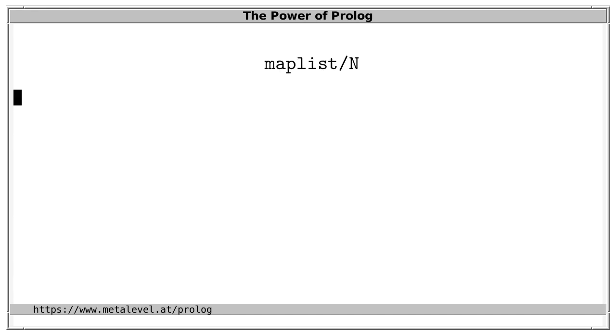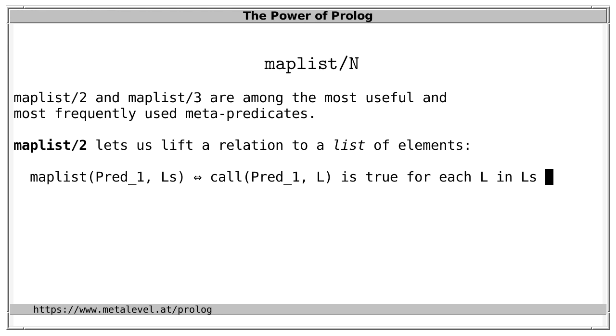We start with the maplist family of metapredicates. Maplist/2 and maplist/3 are among the most useful and most frequently used metapredicates. Maplist/2 lets us lift a relation to a list of elements.